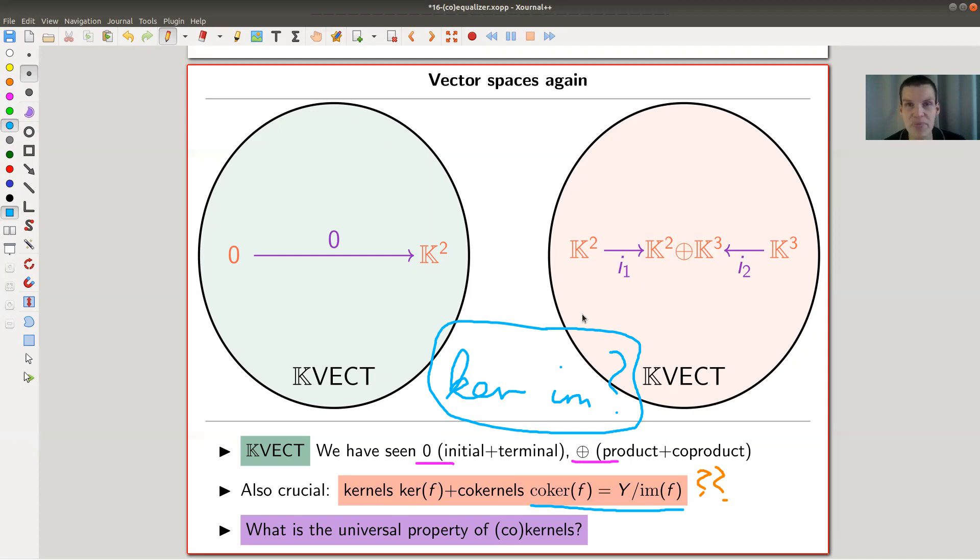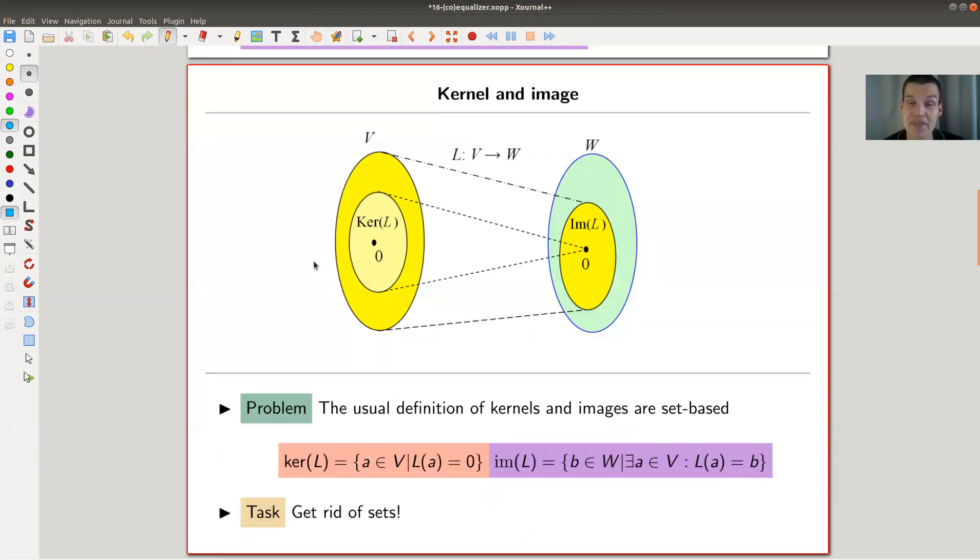And the whole point is, let's have a look: that definition itself looks set-based. Whenever I have a set-based definition, that's not really amenable to category theory. You really want non-set-based descriptions. So the problem here is the usual definitions of kernels and images are set-based.